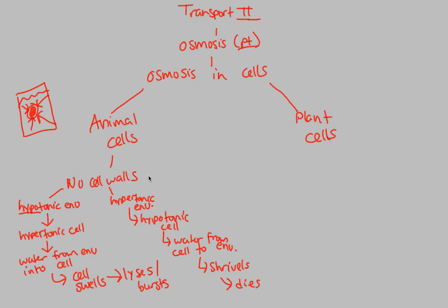Lastly, if we have no cell walls, we can also be in an isotonic environment. This is the easy one — no net movement. Nothing's going to happen. Everybody is good where they are. Water's not going to move anywhere. Solute's not going to move anywhere. Everybody will stay where they are. So this is the idea behind animal cells: hypotonic environment, hypertonic environment — you have to know what are the consequences of each.